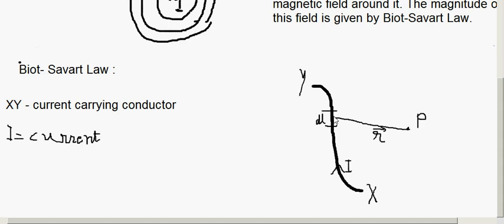DL is a small vector, and theta is the angle between the distance vector R and the current element DL. So we have conductor XY carrying current I, with DL as the small current element, and theta as the angle between DL and R.